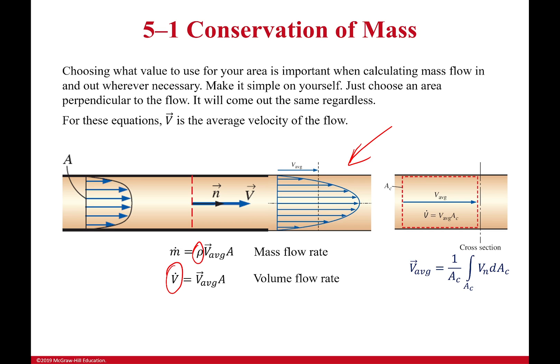Now, one thing we don't talk about all that much in this class, because it's kind of outside the realm of this course — that you will see it in more like aerodynamics courses or fluid mechanics courses — is that the velocity we're actually talking about for a mass flow rate, well, when we're doing our calculations, it's the average velocity. Because in a pipe, or in any real flow, there's going to be some profile of velocities. However, if we're trying to get the idea of what the mass flow rate is doing, we can just take the average of those and make it easier on ourselves.